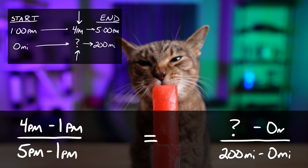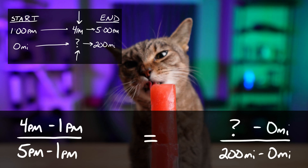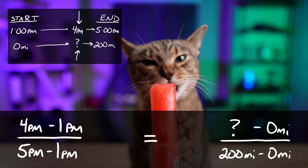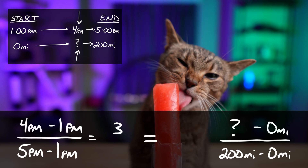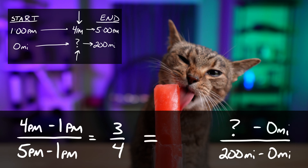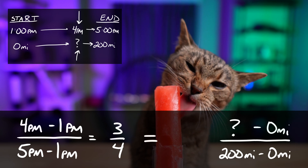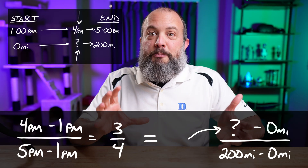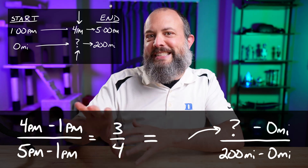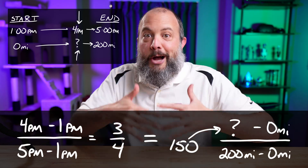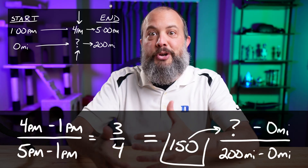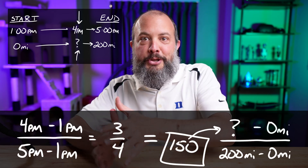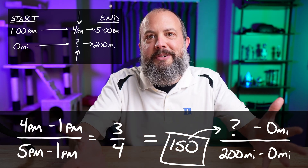The top left term in both fractions will always be the number you were given in your problem statement — in this case, the 4 p.m., that point that's in the middle. And on the other fraction will be the thing you're trying to find. Each of these fractions represents the percentage — in this case, 75% — as to how much of the road trip has already been completed, or how far from the lower number you have gotten towards the larger number.